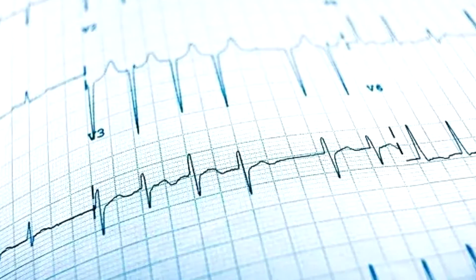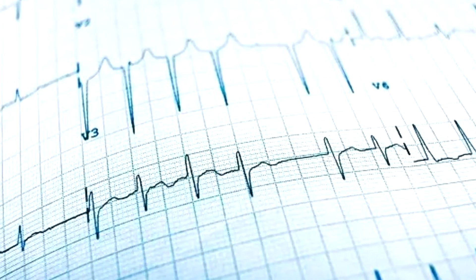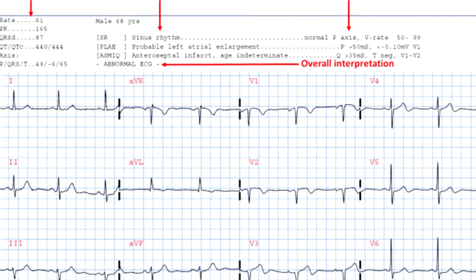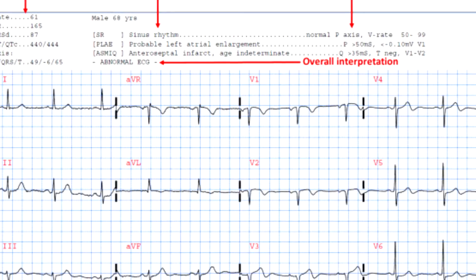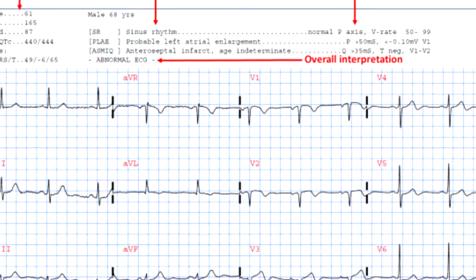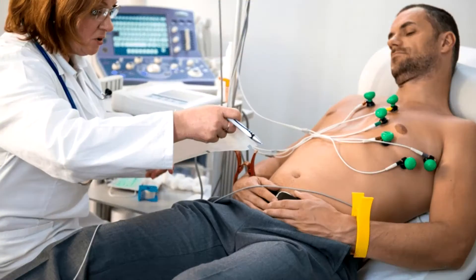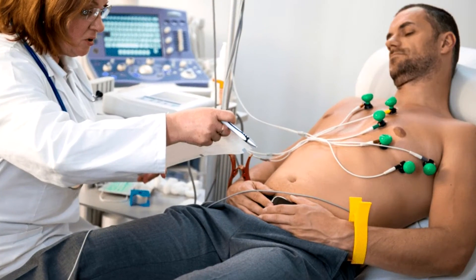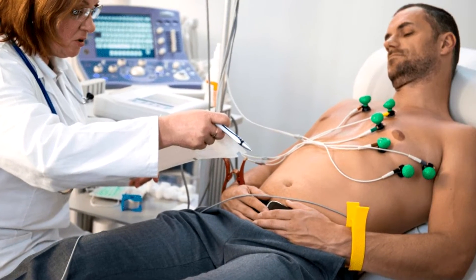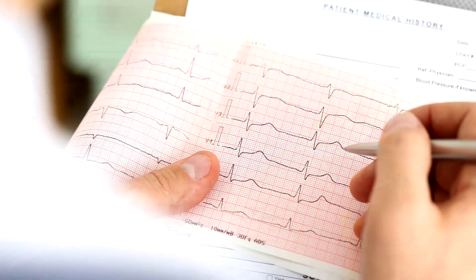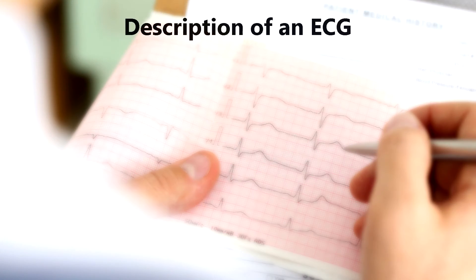Many ECG recorders will automatically give you heart rate and conduction intervals. They are usually accurate. However, you must examine the ECG yourself, as recorders tend to overreport and describe abnormalities where none exist. The description of an ECG should be reported in a specific sequence.